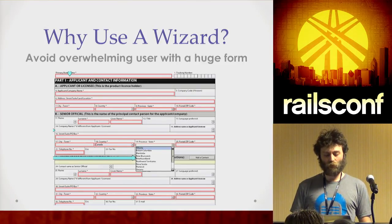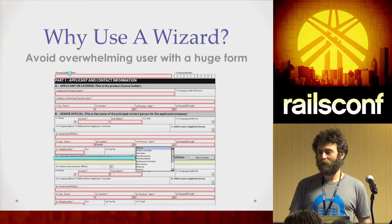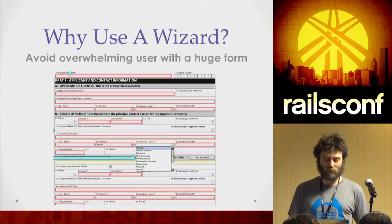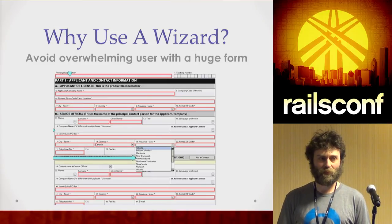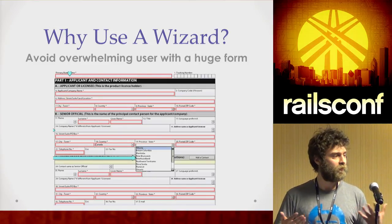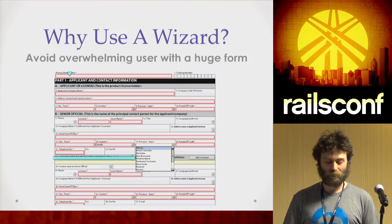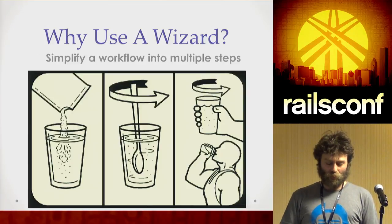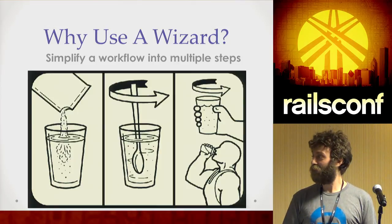We don't want to overwhelm the user with a huge form of information, kind of like those government forms that we have in Canada. I come from Montreal, by the way. This is painful on a computer screen. Computers should enable people to do better than actual physical paper. One way of tackling this problem is to divide it into multiple steps in a wizard — simplifying the workflow into multiple steps that make them digestible.